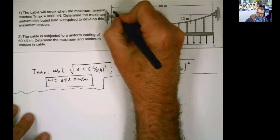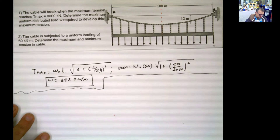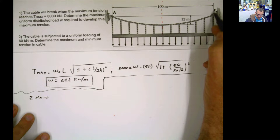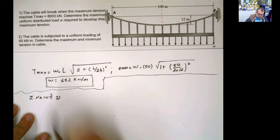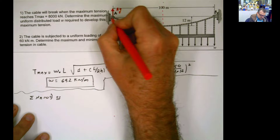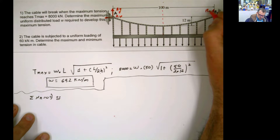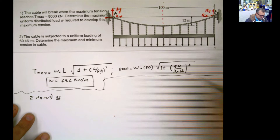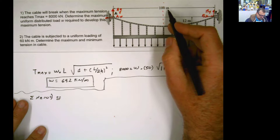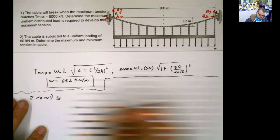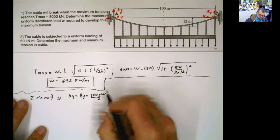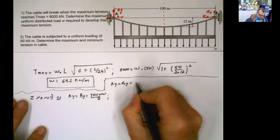For the second approach: call the supports A and B. We can calculate reactions using equilibrium. Because everything is symmetric, the vertical reactions are equal. So A_Y equals B_Y equals 100 times W divided by 2, which gives A_Y equals B_Y equals 50W. Now we have the vertical reactions.